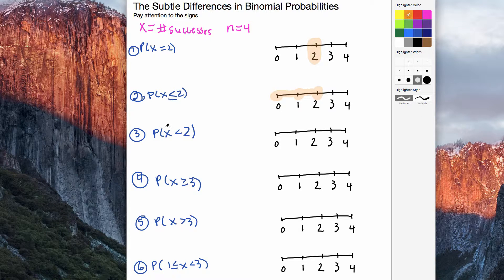The third one, the probability that the number of successes is less than 2. So if I go to my number line, I have to be below 2. So anything below 2 is okay, 1 and 0.